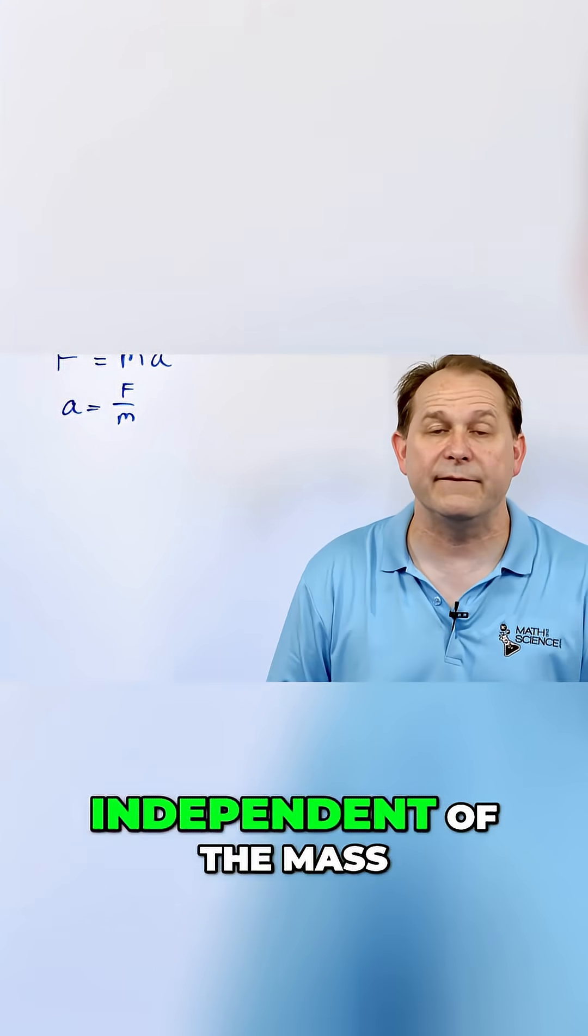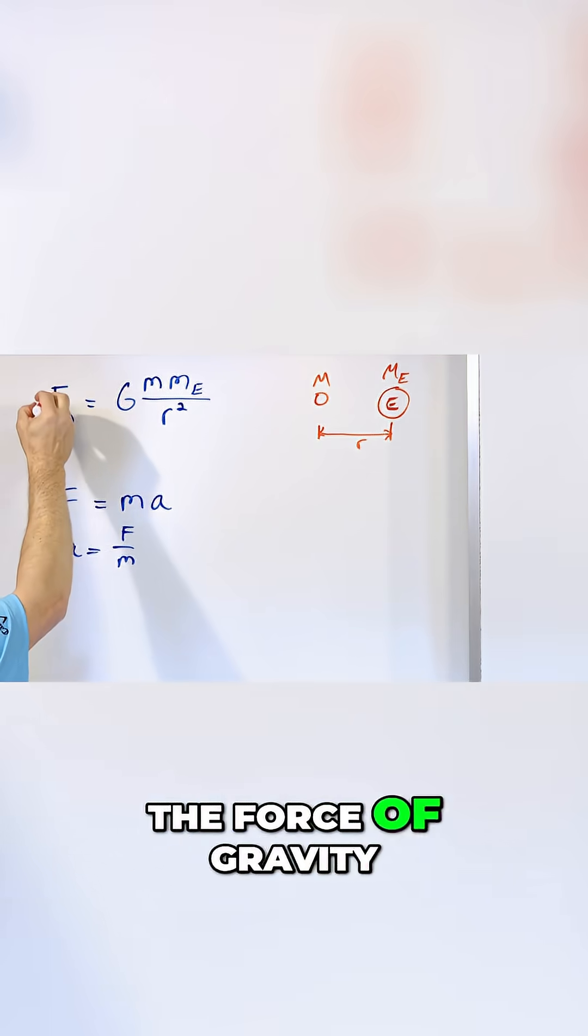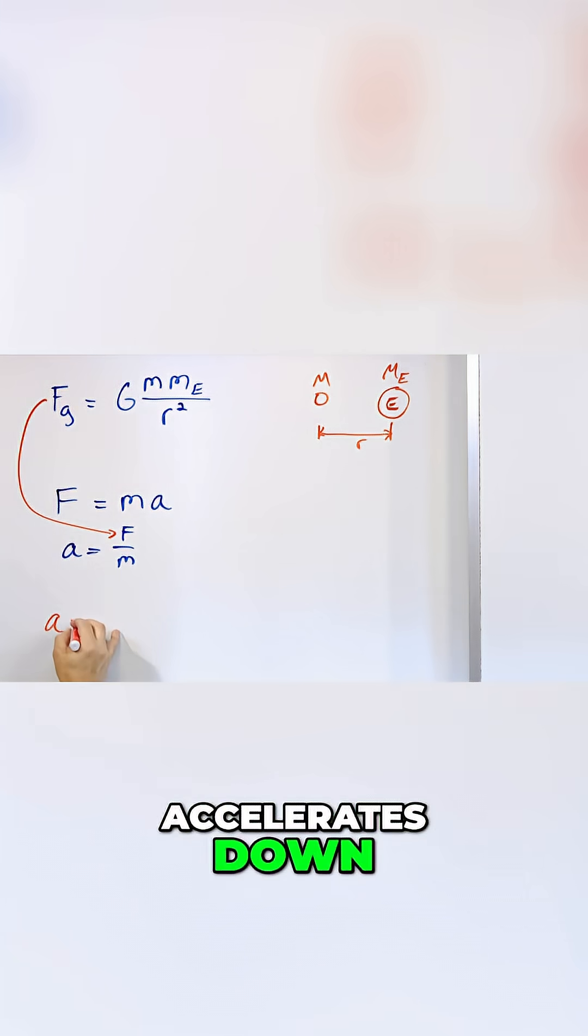It's independent of the mass of the object. So let's show how that happens. If we know that the force of gravity is here, we'll just plug it in right here and see how fast it accelerates down.